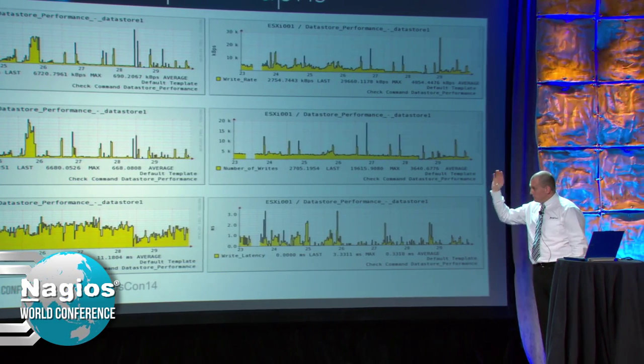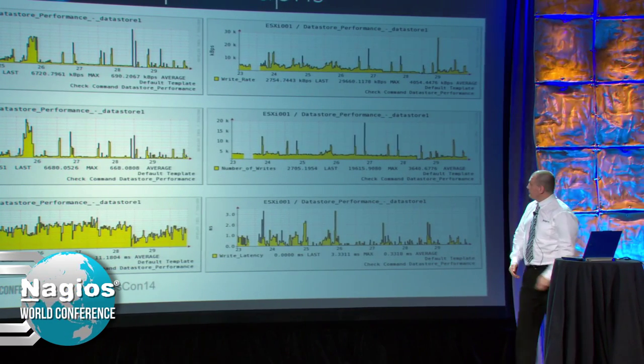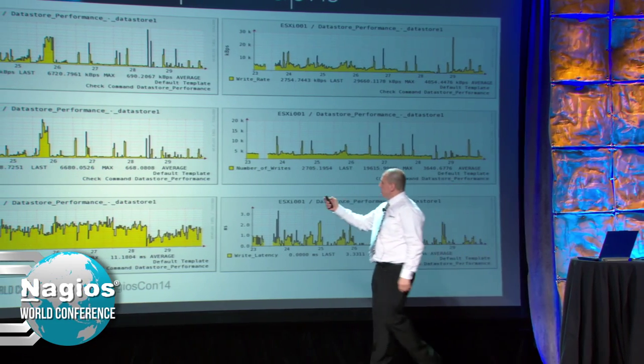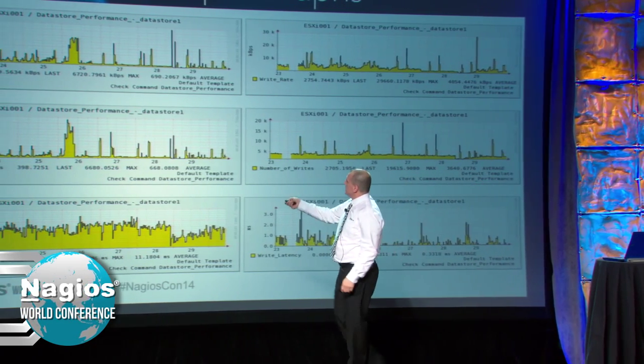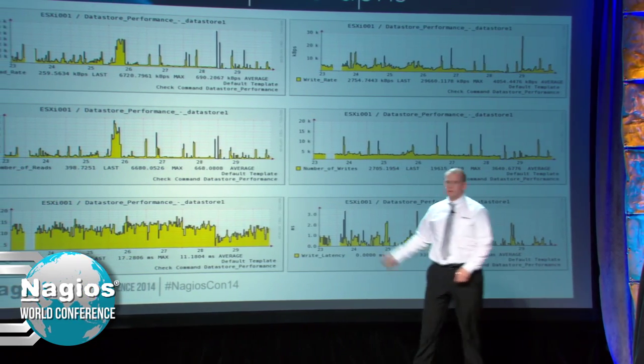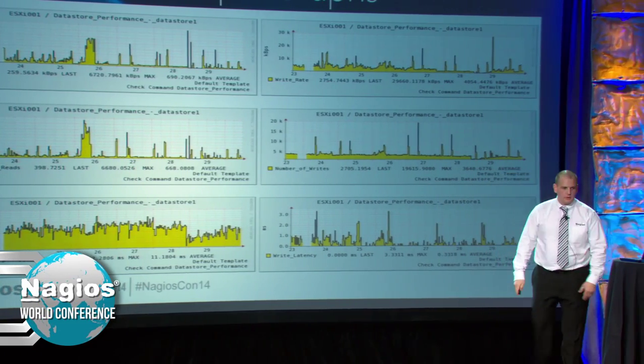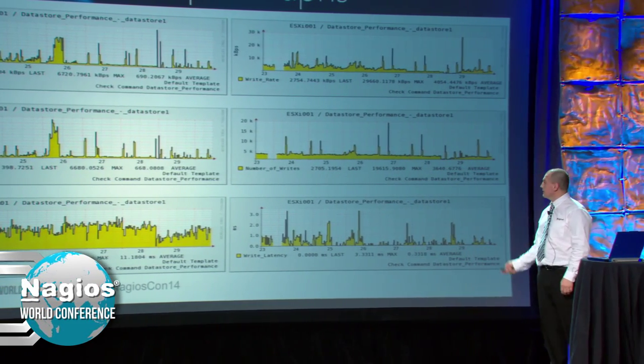These percentage numbers aren't actually being put into the performance data string because the graphing tool can quite easily calculate that value based off the read and write and do a simple percentage calculation. Here's an example showing read and write rates for the data store performance, the number of reads, the number of writes, and the latency for reads and writes. You can just pick up patterns.